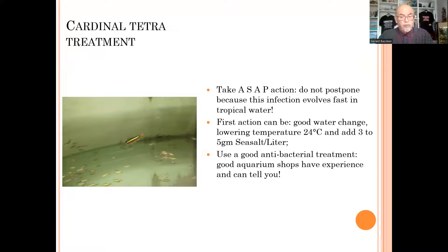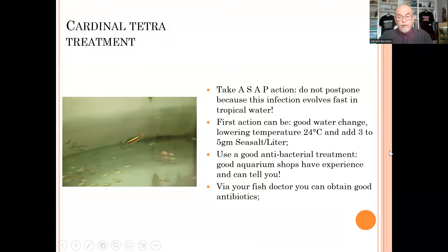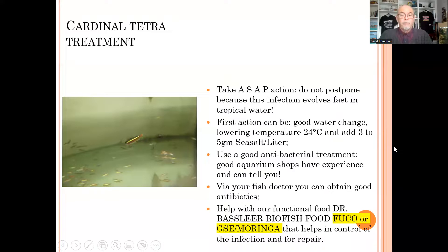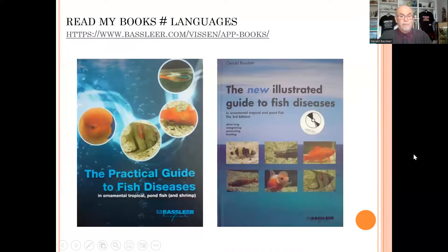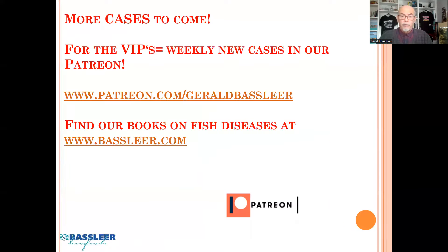Then use a good antibacterial treatment — there are quite a few on the market. Find a shop that has experience with this, because it is a common disease in the tropical fish hobby. Your fish doctor can also help you obtain a good antibiotic. You can also help with functional fish food like fucoidan or grapefruit seed extract and moringa, which help control the infection and support repair of the fish. But above all — act quickly.